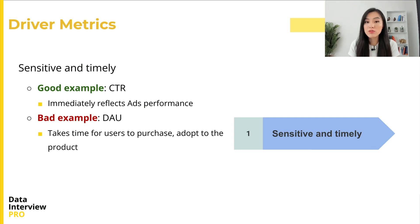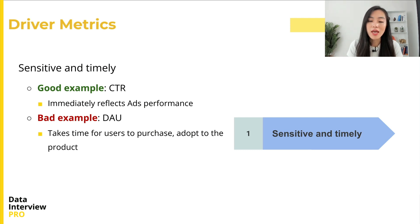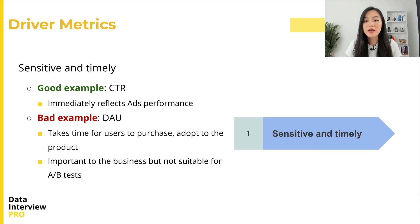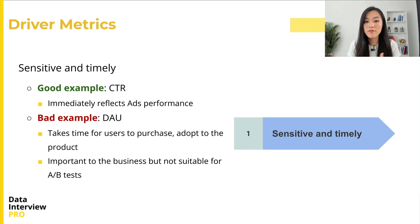On the other hand, the daily active user of a particular product being advertised might not be a good driver metric because it can take time for people to purchase the product, start using it, and become a daily active user. Daily active user may be better suited as a success metric than a driver metric because it can be impacted by multiple factors and may not be sensitive enough to the change in the ad. Such metrics are not appropriate for running A/B tests because they are not sensitive enough to measure the treatment effect.